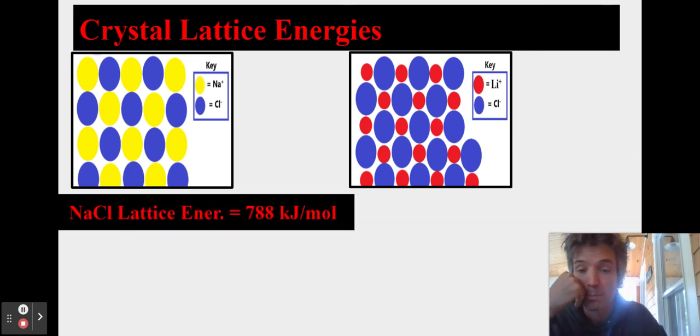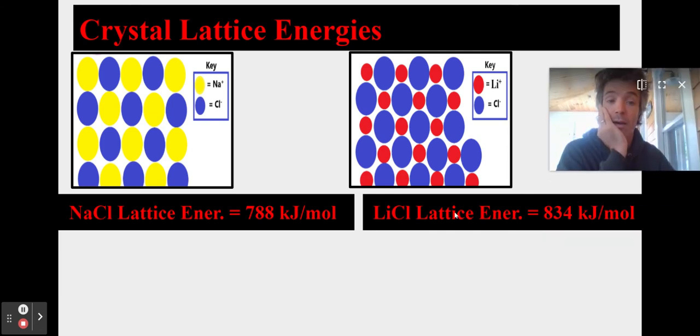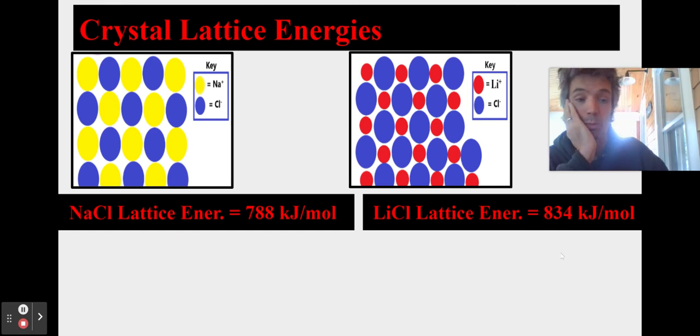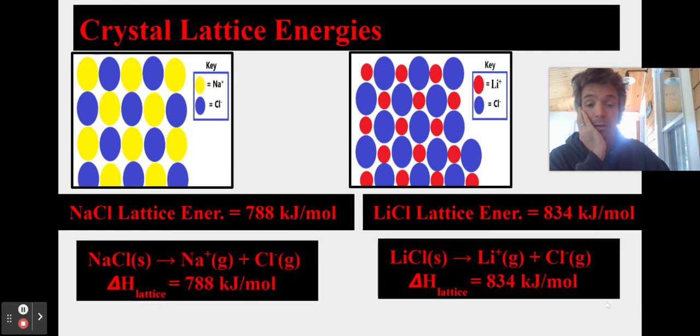Here's sodium chloride's lattice energy. And there you can see this is lithium chloride's lattice. It's about 60 kilojoules per mole higher. And here's another way of writing it. You're going to delta H lattice, a change in enthalpy. All right, it's the same thing.